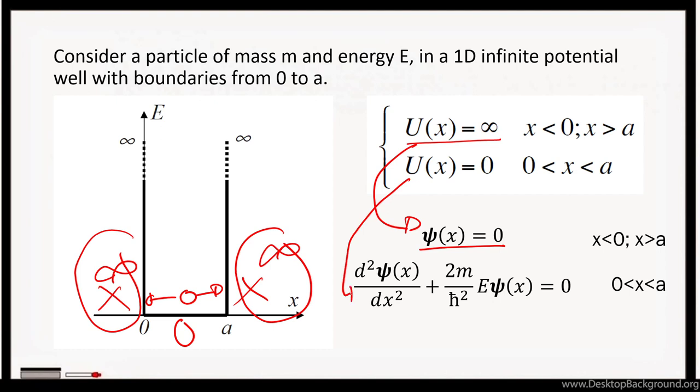Inside of the well, since U(x) is equal to 0, the E minus U becomes just E, and we get this Schrödinger equation here: d²ψ(x)/dx² + (2m/ℏ²)Eψ(x) = 0.